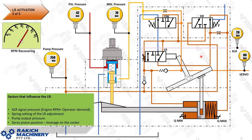To summarize: the factors that influence the LR are the XLR pressure input, which is controlled by engine RPM plus the operator demand; the spring setting of the LR valve; the pump outlet pressure acting on this rocker; and the servo piston position, which changes the leverage required to force the rocker — it takes a lot less pressure to push the rocker over when the piston is at full stroke than as it comes back. Very complicated, but it all contributes to the hyperbolic power curve that these pumps boast. This function has been made redundant on the 6060 model machines — on the 6060 you would find the LR adjustment is wound fully in and there is no XLR input anymore, so this whole function is disabled.